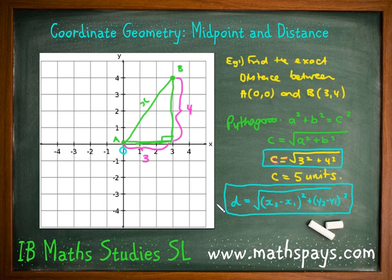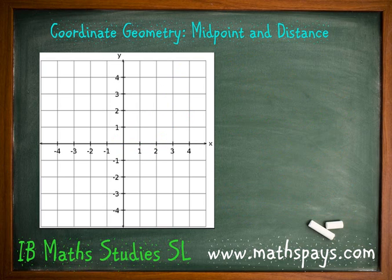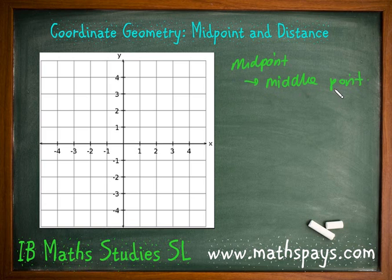Exact distance means that if the answer isn't a perfect square — something like root 3 — we can't write it as a decimal, so we leave it in exact form. Your GDC will often do that for you. That's the first formula. The second topic is how to find the midpoint. The midpoint is the middle point. This is not on your formula sheet, so you need to understand how to do it.